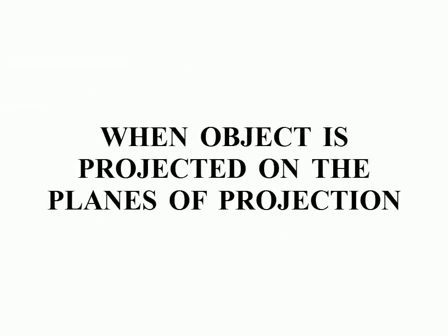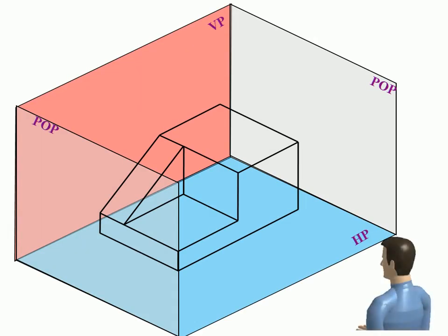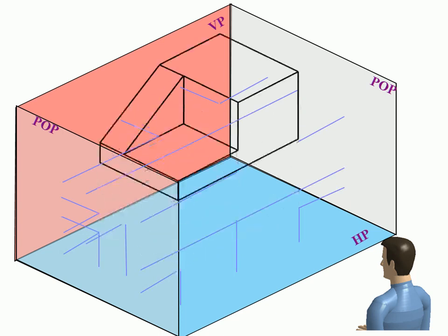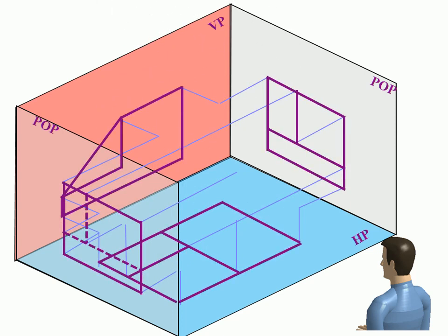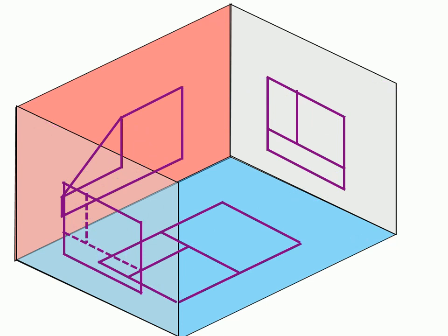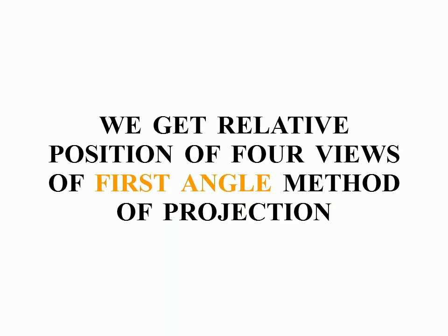When object is projected on the planes of projection, we get relative position of four views of first angle method of projection.